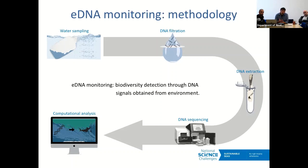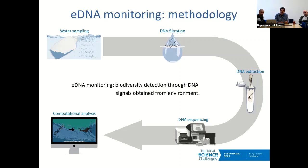You then extract the DNA from that filter and amplify parts of it that are markers for whatever you're interested in. These can be very broad markers like all eukaryotes, or more specific ones like fish or crustaceans. You amplify those bits of DNA, sequence them, and the result is millions of DNA sequences. You can compare them to a database where sequences are assigned to species, and you get a list of species found in your water sample.